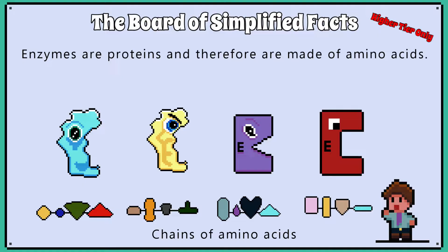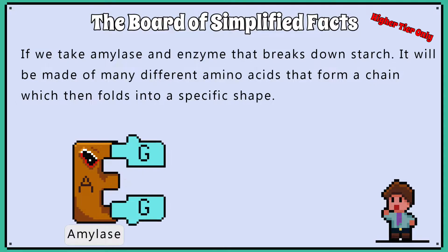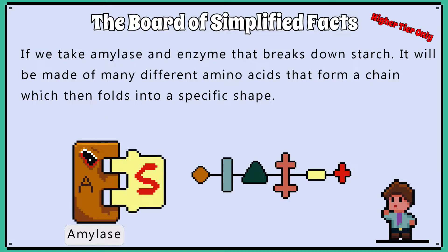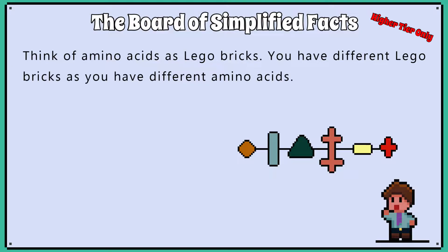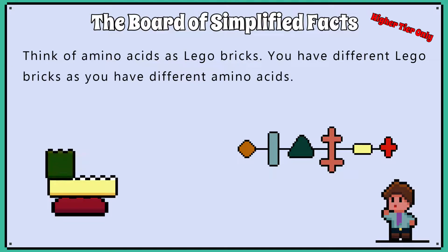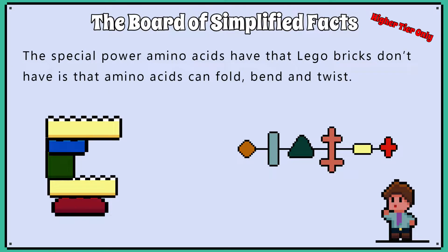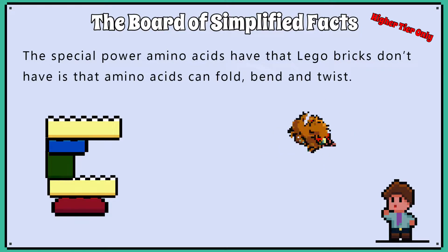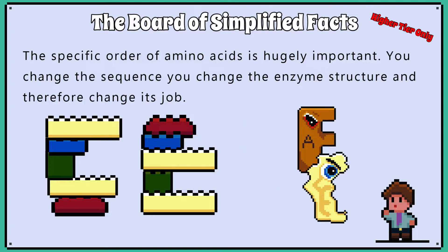Enzymes are proteins and are therefore made of amino acids. If we take amylase, which is an enzyme that breaks down starch, it will be made of many different amino acids that form a chain which then folds into a specific shape. Think of amino acids as Lego bricks — you have different Lego bricks just as you have different amino acids. Depending on how you connect the amino acids together, you get a different enzyme. The special property amino acids have that Lego bricks don't is that amino acids can fold, bend, and twist. The specific order of amino acids is hugely important — you change the sequence, you change the enzyme structure, and therefore change its job.